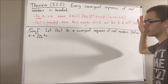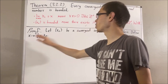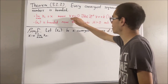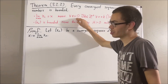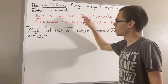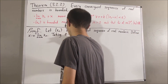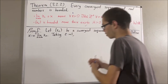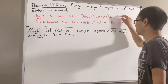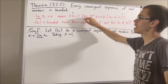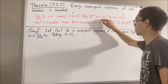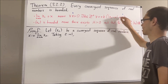Since xn converges to x, we are given that the convergence definition holds, and it works for every positive real number epsilon. So in particular, it must work for epsilon equal to 1. Taking epsilon to be 1, there exists some positive integer k such that for all positive integers n greater than k, the absolute value of xn minus x is less than 1.